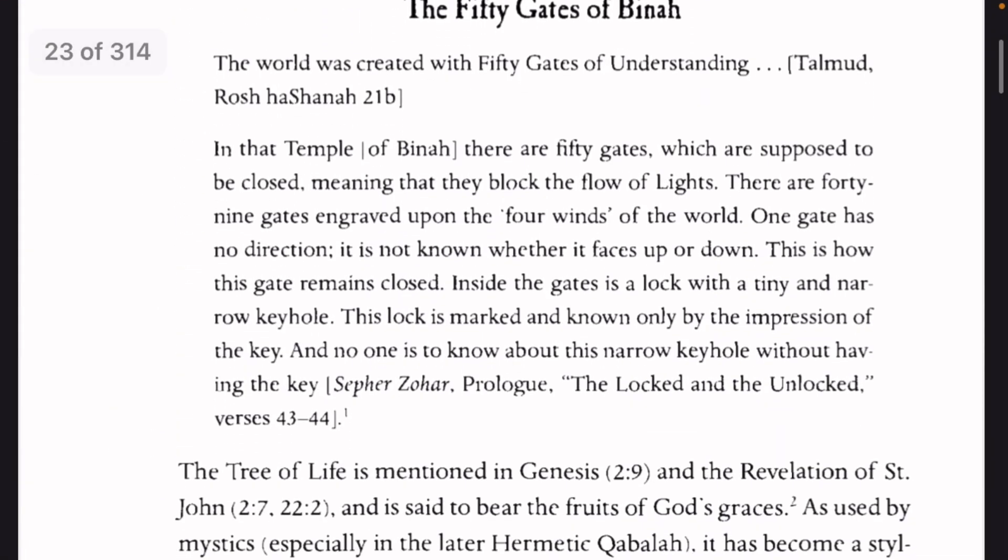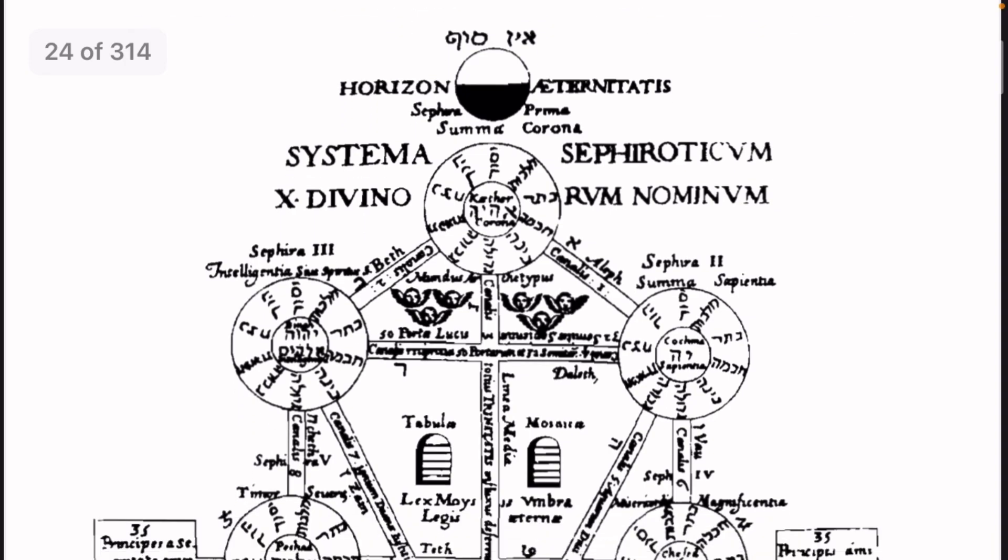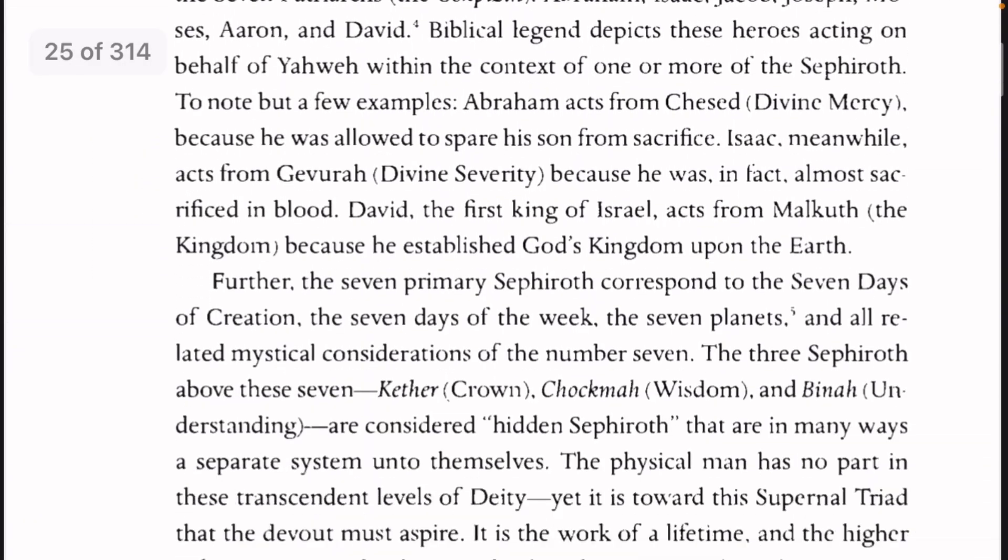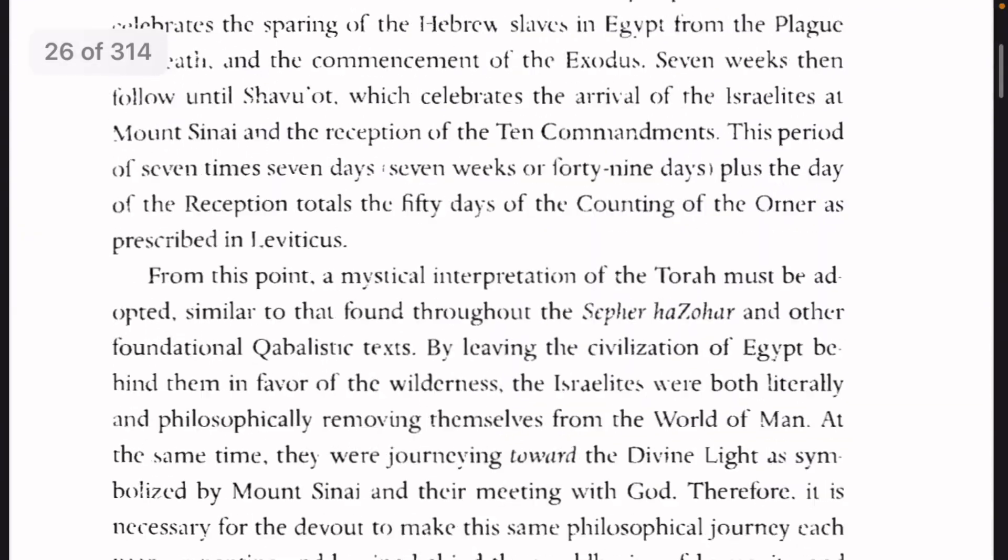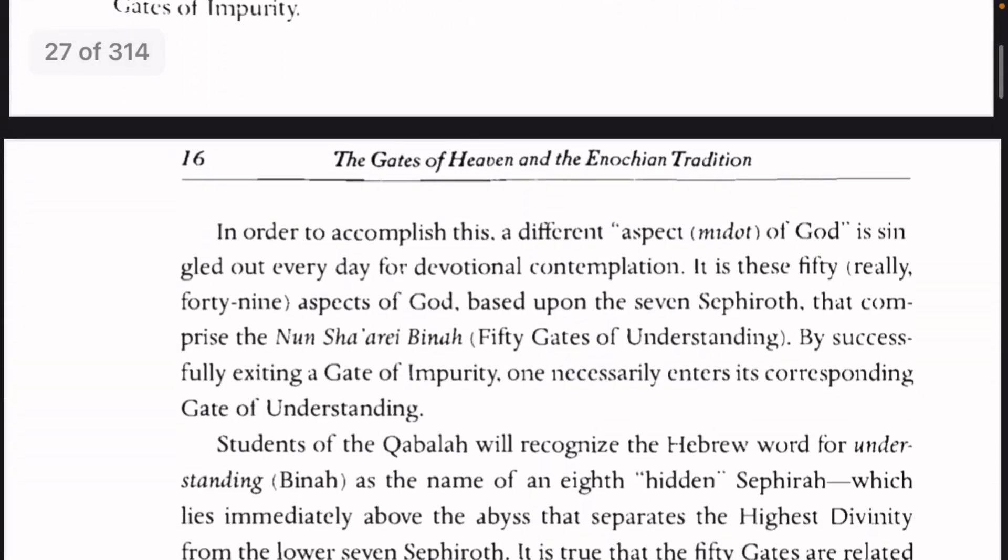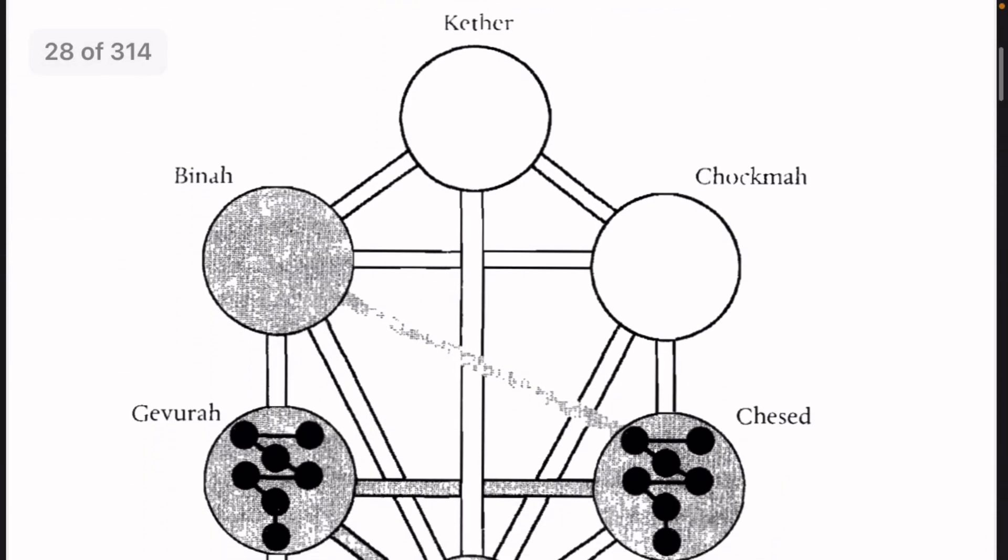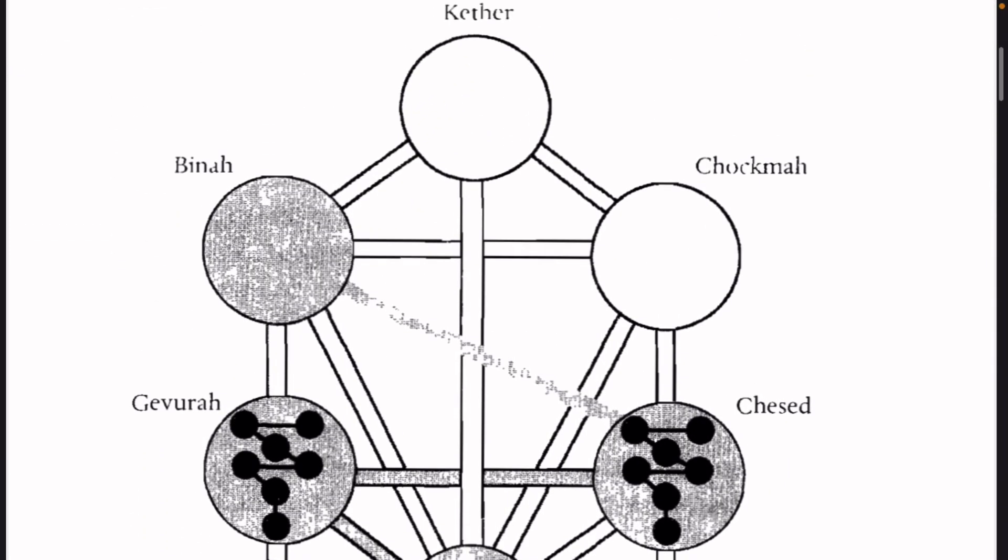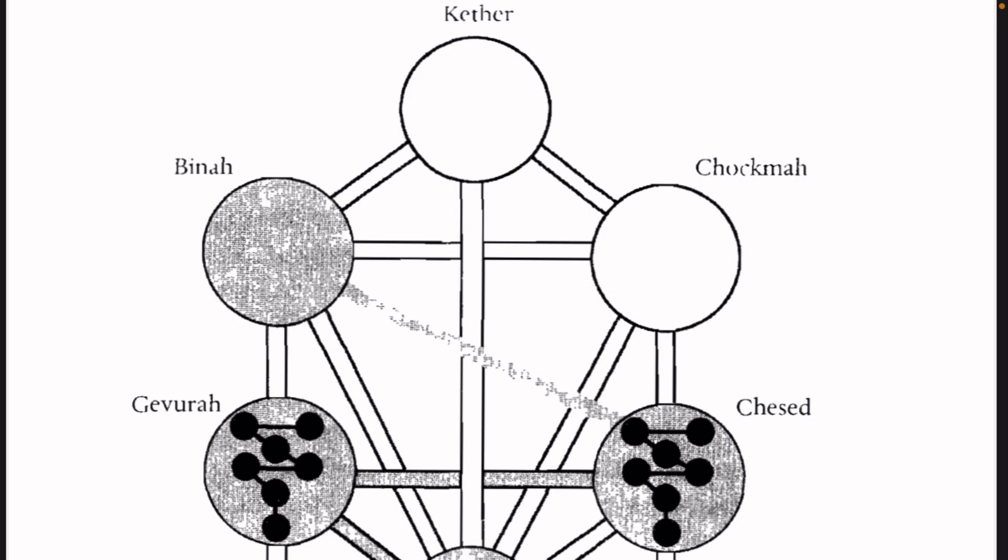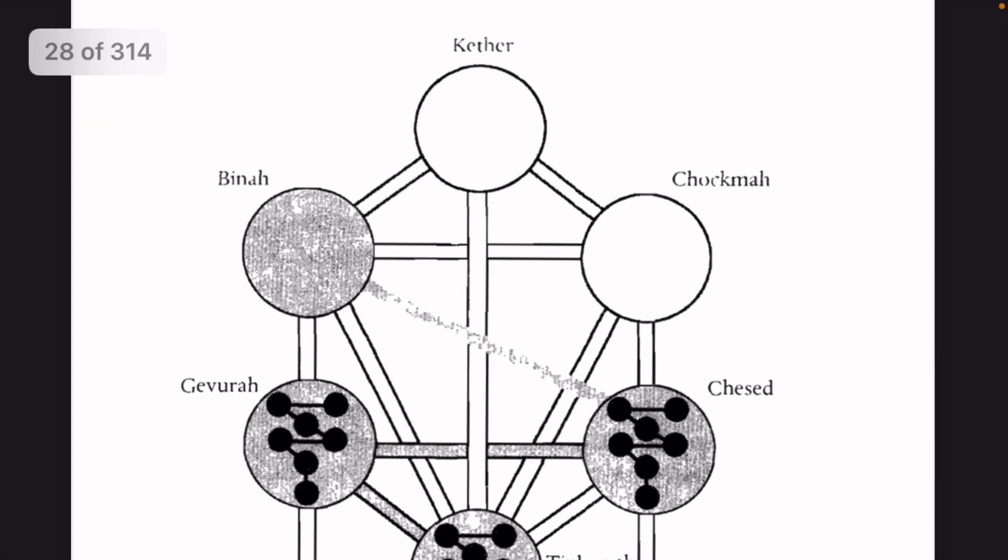The revelation I immediately received from reading her teaching on this is that the 70 times 7 that we read of in the book of Daniel, that Christ tells us of—forgive your brother if he offends you 70 times 7—that means on the coming of the Lord.